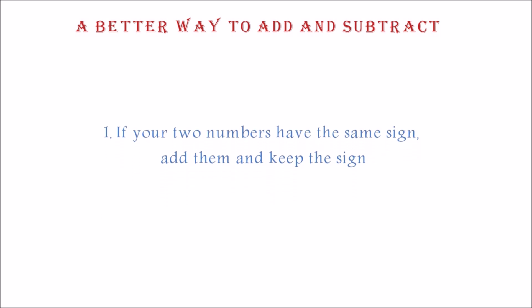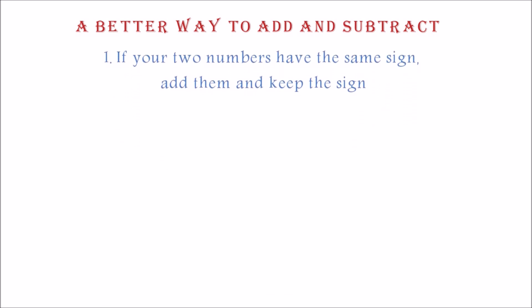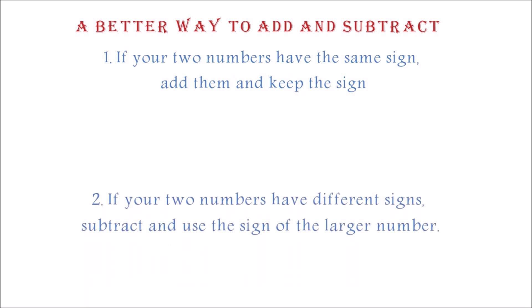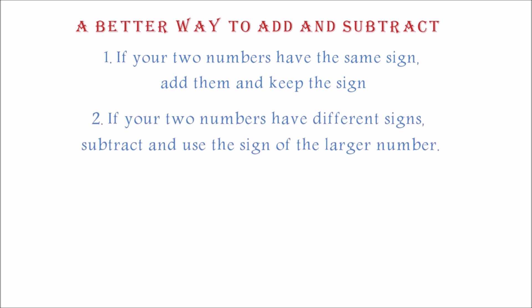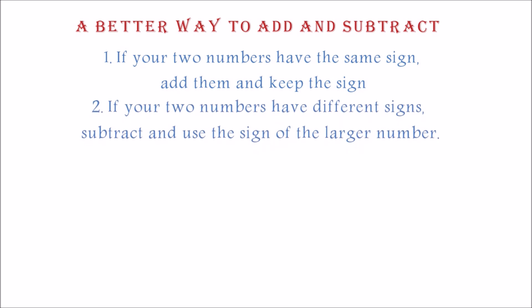A better way to add and subtract. When working with larger numbers, the idea of moving on the number line becomes impossible to use. So the method we are about to learn will be appropriate for solving all addition and subtraction of integers. Rule one: if your two numbers have the same sign, add them and keep the sign. Rule two: if your two numbers have different signs, subtract and use the sign of the larger number. Please pause this video and memorize this — it is extremely important.